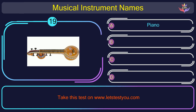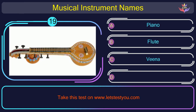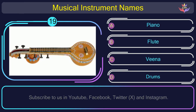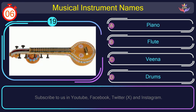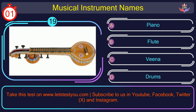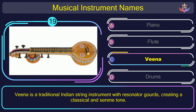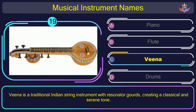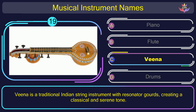Question number 19. Find the name of the musical instrument in this picture. The correct answer is option C: Weena. Weena is a traditional Indian string instrument with resonator gourds, creating a classical and serene tone.